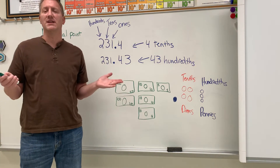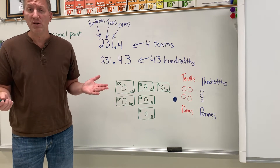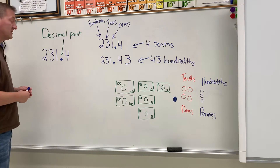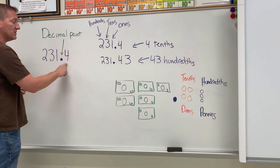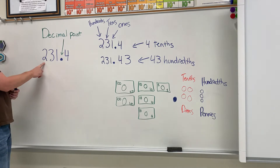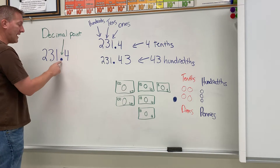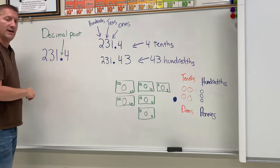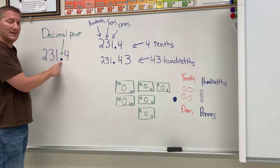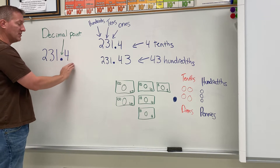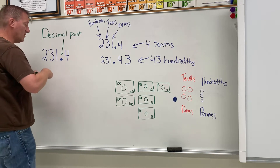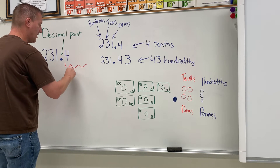So you might be thinking, well there is nothing to the right of the ones place. Well as far as you know so far there isn't, but I'm gonna tell you there is. What I'm going to introduce today are two spots to the right of the ones place. Here's the ones place, here's the tens place, here's the hundreds place, and to the right of that it is separated by this little dot right here. You probably see what it is — it's called a decimal point. The decimal point separates the place values to the right from the whole numbers. These are called decimals.